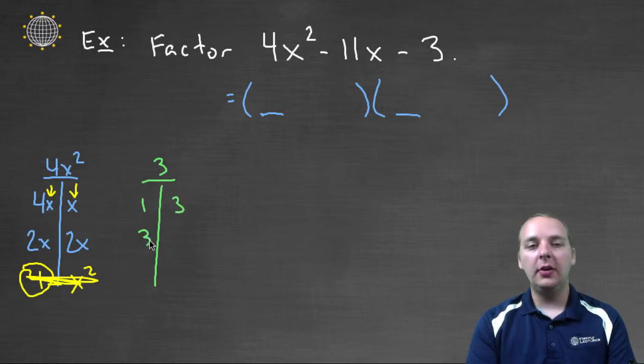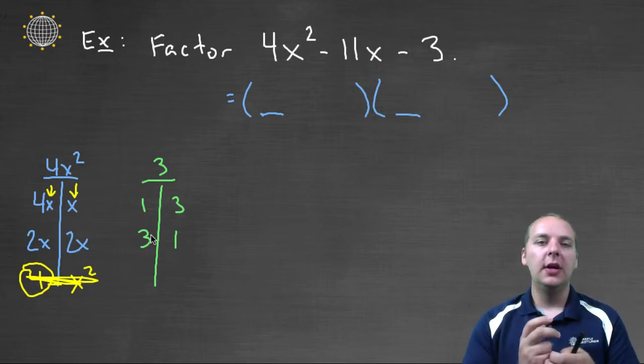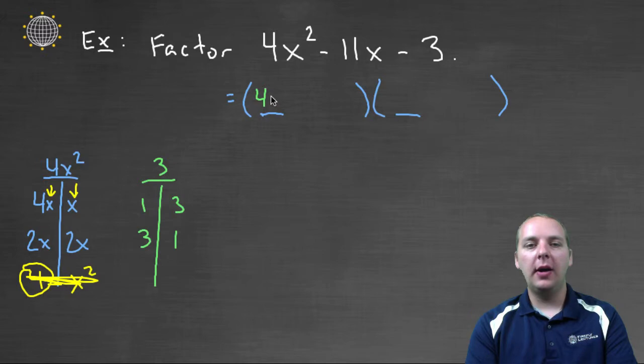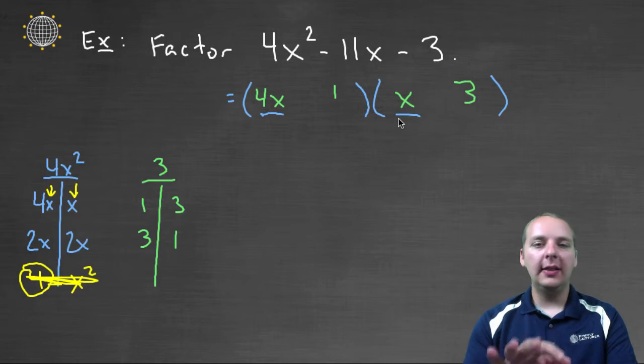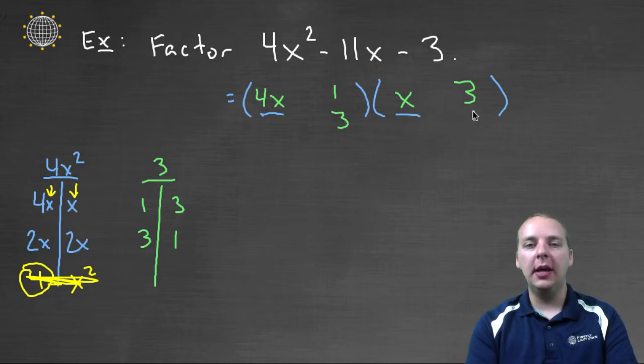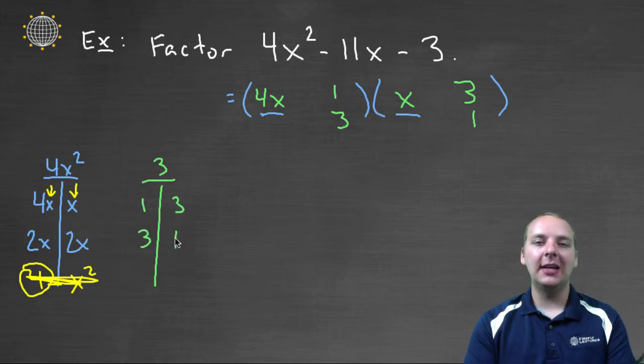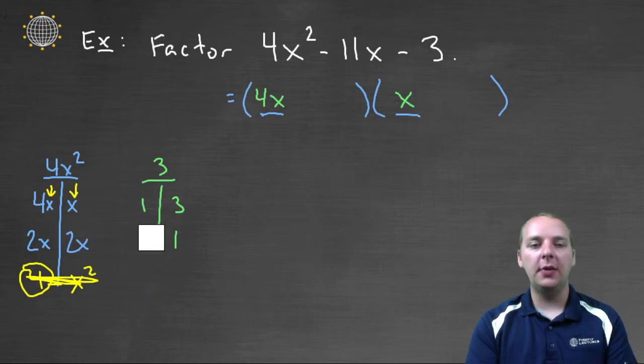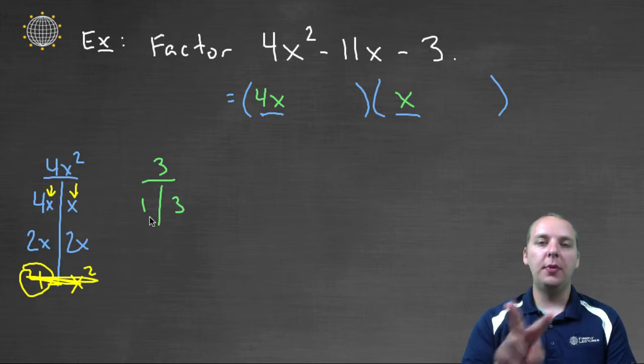The only way to get three would be a one times three, or technically you could also have three times one. Now earlier we never had to do this. We didn't actually have to write them in two separate orders. But now we do, and I'll tell you why. If we lead off our first terms with like a four x and an x, putting a one and a three, and foiling that would be very different than having a three and a one. So we actually have to list these as actually different options, because they will foil different ways. Okay, so you can either write it twice, or if you can just remember that you're going to need to try it both ways, you don't even need to write it twice, but just remember you're going to have to try the one and the three in both places.